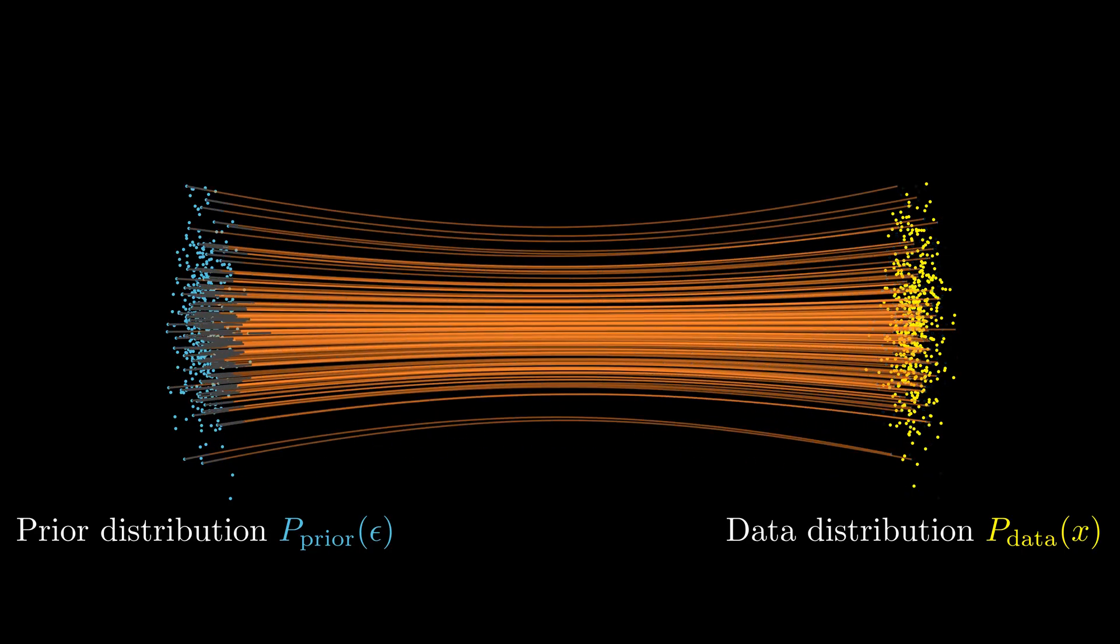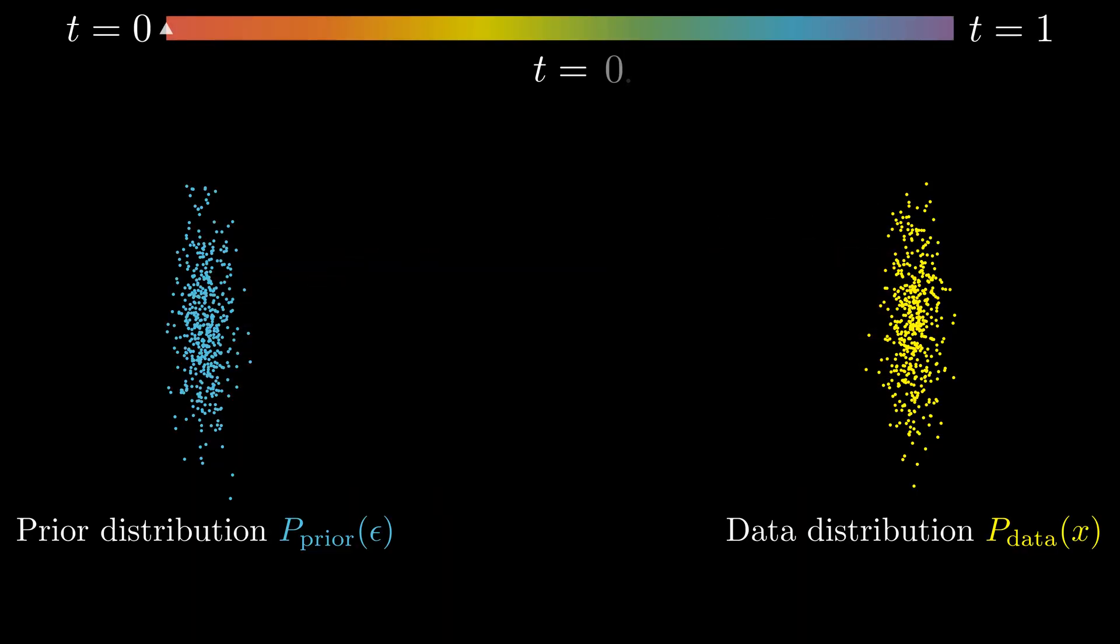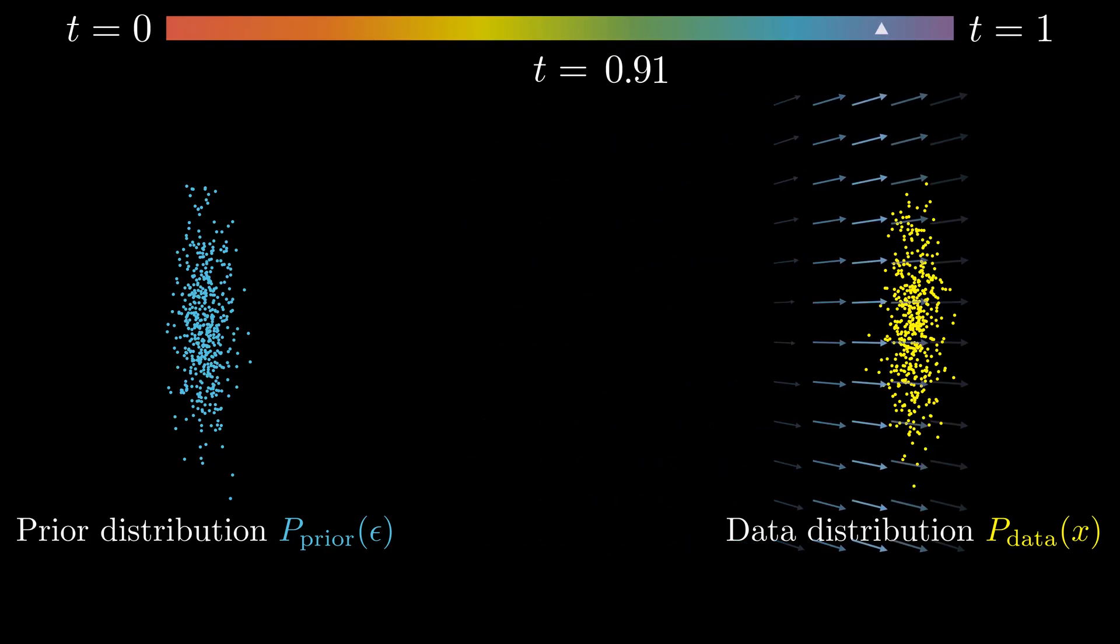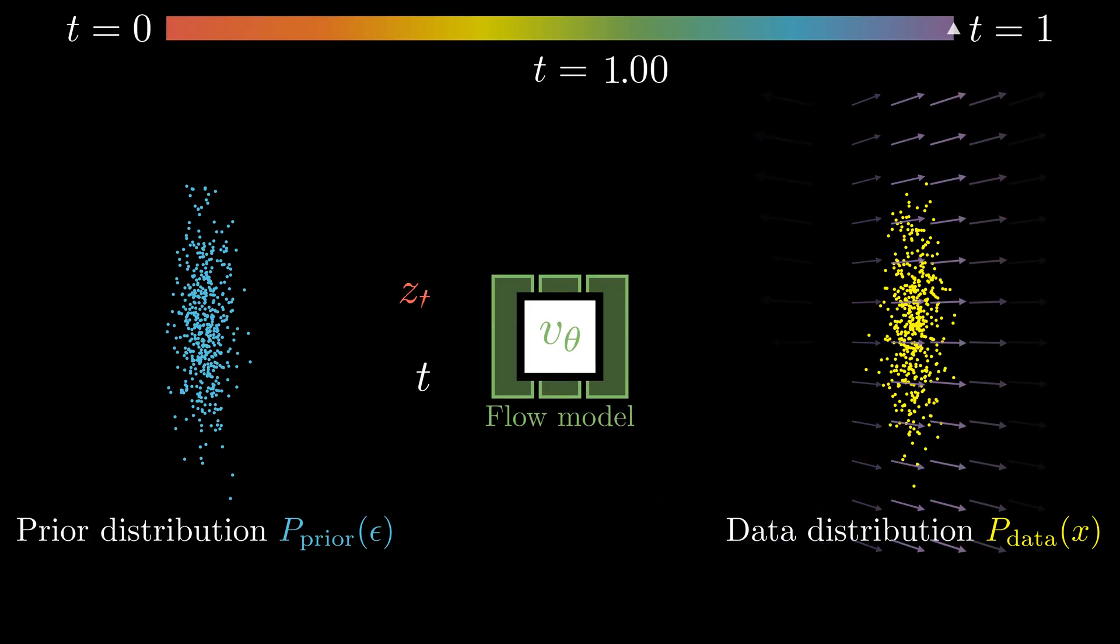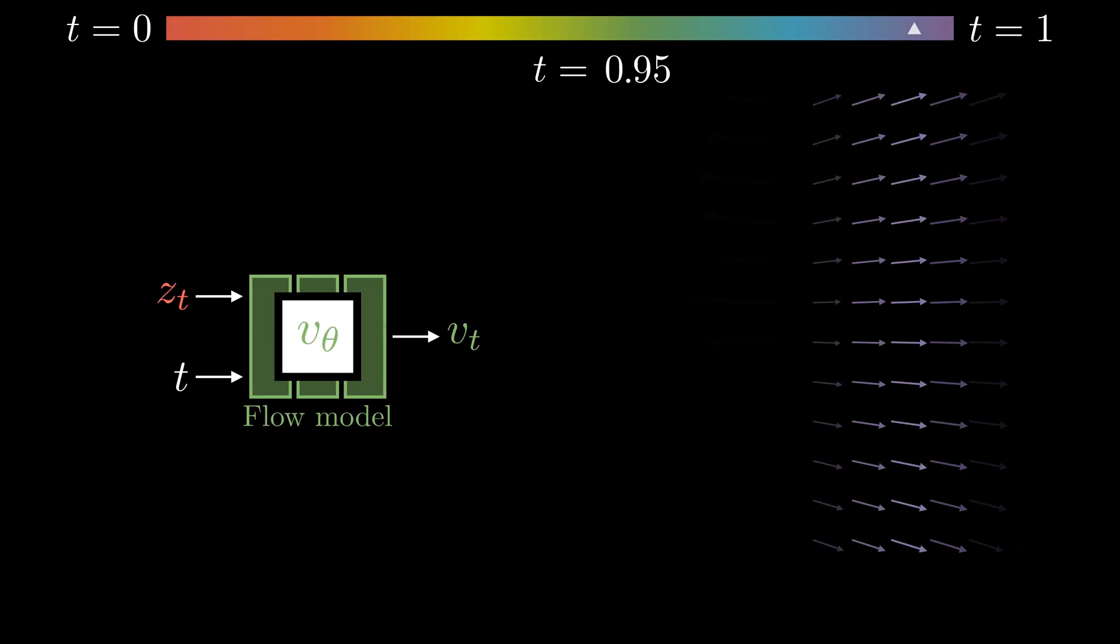Our goal here is to transform a prior distribution into a data distribution. But how do we characterize this transformation? We model it with the time-varying velocity field, aka the flow. The core idea of flow matching is to learn this velocity field. At any given time and location in the space, we train the neural network to predict the corresponding vector. This is called flow matching.